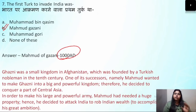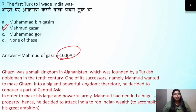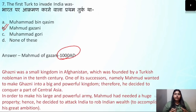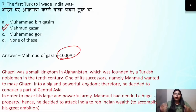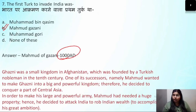Ghazni was a small kingdom in Afghanistan, founded by a Turkish nobleman. His successor Mahmud wanted Ghazni to become a big and powerful kingdom, so he decided to conquer Central Asia as well. To fulfill his big ambition and to acquire property, he decided to raid India and loot its wealth. With this ambition he invaded Bharat. The first Turk to invade India was also Mahmud of Ghazni.